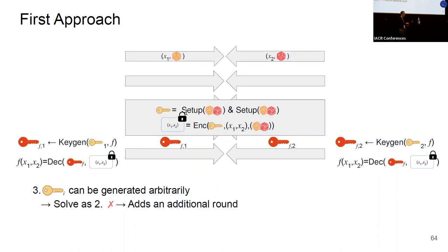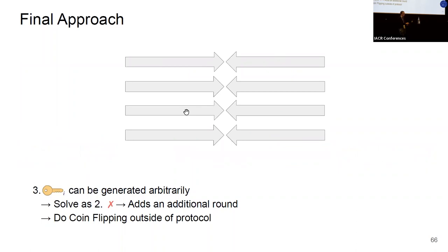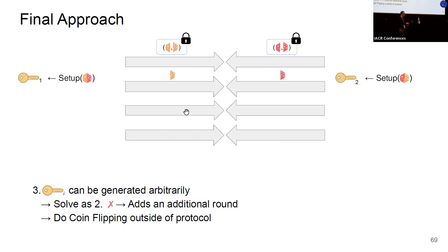The idea to circumvent this is to do coin flipping outside the protocol. Both parties commit to two random values and send the commitments to the other party. In the second round, they reveal which one of these random values corresponds to each commitment without providing openings. Each party then takes the remaining value inside the commitment and uses the value received from the other party for joint randomness. This allows the parties to obtain their master secret keys at the end of the second round.